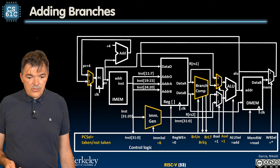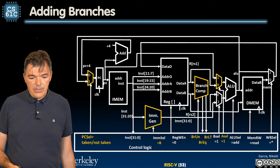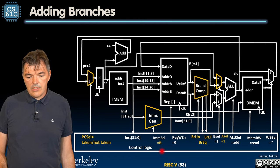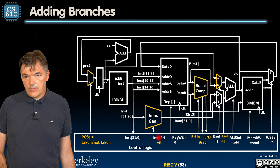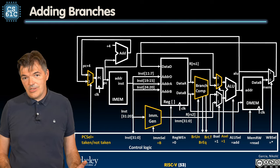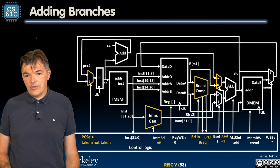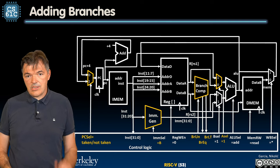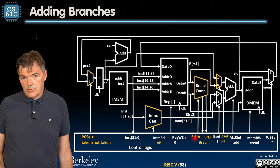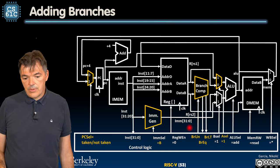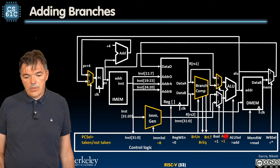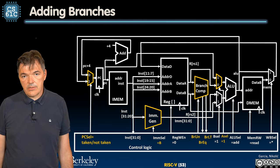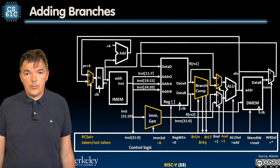There are a few additional things that need to happen. We need to set the immediate select to the branch type of immediate. That means we need to generate yet another type of immediate in addition to I and S type of immediates. Then we need to control the branch comparator with whether it's signed or unsigned based on the coding of the instruction. And then we need to control this multiplexer as well in front of the A input to the ALU.